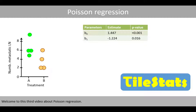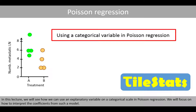Welcome to this third video about Poisson regression. In this lecture, we see how we can use an explanatory variable on a categorical scale in Poisson regression. We'll focus on how to interpret the coefficients of such a model.